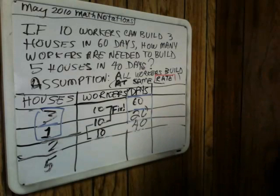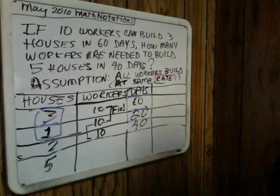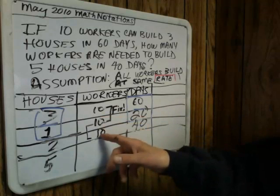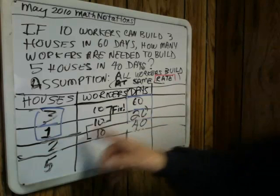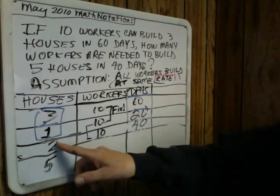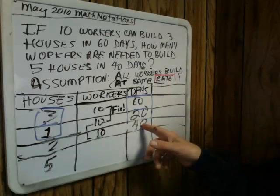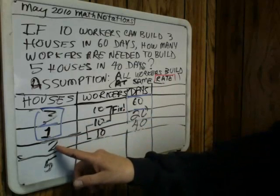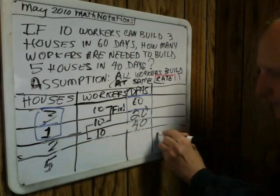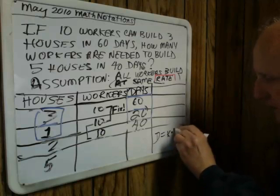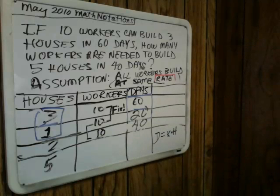This will become a crucial type of relationship in mathematics, and it doesn't have to wait till high school. For a constant number of workers, the number of days is directly proportional to the number of houses. More advanced language: days are proportional to, or vary directly as, the number of houses. Days equal constant times houses — that will come later.